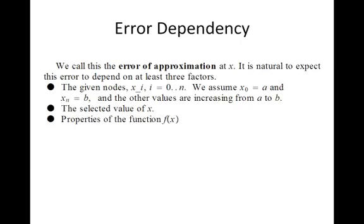It is natural this error should depend on at least three factors. And those factors in the error of approximation are the nodes themselves, those are the x sub i's. Here we are assuming that x0 equals a, and xn equals b, and the other values are increasing from a to b. The selected value of x and properties of the function f of x.